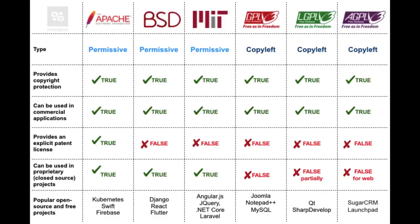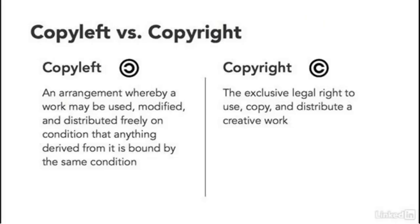There are a number of free software licenses. The GPL, which I already mentioned, but there are also permissive licenses like BSD, MIT, and Apache, to name a few. However, only GPL is what we would call a copyleft license.